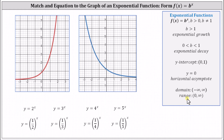Before we look at this using desmos.com, notice for the first four equations, b is two, three, four, and five. And for the second set of equations, b is one-half, one-third, one-fourth, and one-fifth. So for the first four equations, we have exponential growth, and therefore the red graph must be one of the first four equations. For the second set, b is between zero and one, so we have exponential decay, and therefore the blue graph must match with one of those last four equations.